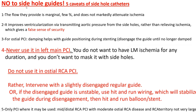Here are the five caveats to side hole catheters — and the answer is overwhelmingly no. One: the flow they provide is marginal, a few percent, and does not markedly attenuate ischemia. Two: it improves ventricularization via transmitting aortic pressure from the side holes rather than relieving ischemia, giving a false sense of security. Three: for osteal PCI, I actually like to see damping — it tells me whether my guide is still in and whether it still needs to be disengaged while I'm positioning my stent. I use damping in my favor while positioning the stent, disengaging until no longer damped. Four — very important: never use it in left main PCI. You do not want concealed left main ischemia for any duration; you don't want to mask it with side holes. Five: do not use it in osteal RCA PCI — it has no value. Intervene with a slightly disengaged regular guide, or if the disengaged guide is unstable, use hit-and-run wiring to stabilize the guide, then hit-and-run balloon/stent.